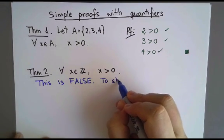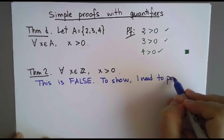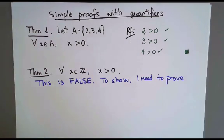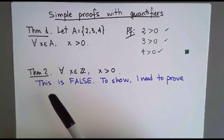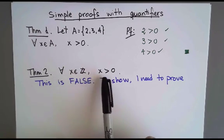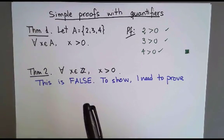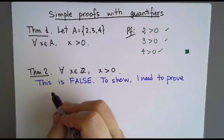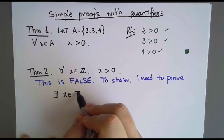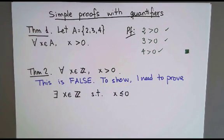So to show that a statement is false, I need to prove that the opposite is true. So let's start by writing the opposite. What's the opposite of saying for every integer x, x is greater than 0? What's the opposite of saying this is true for every x? The opposite is saying this is not true for at least one x. So the opposite of this is that there exists an integer x such that x is less than or equal than 0. That's the opposite.